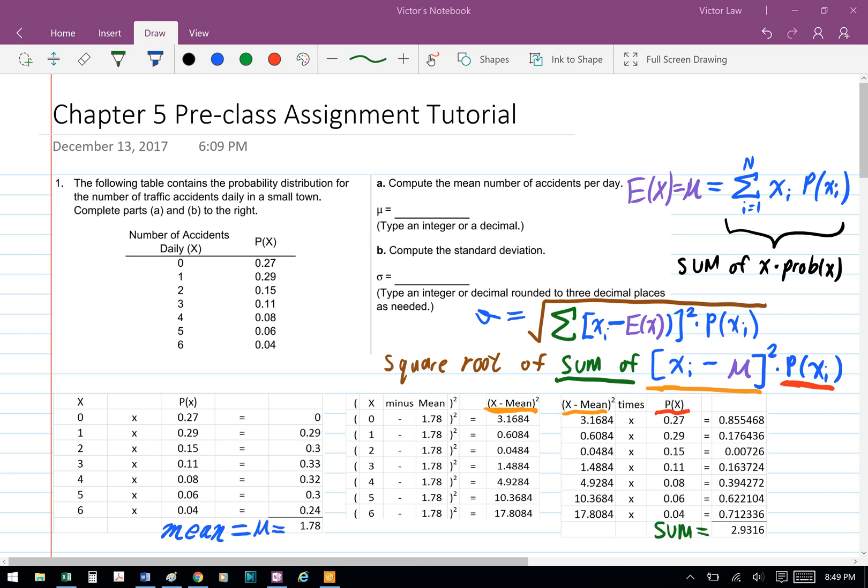And then we're going to add them up. So we get a summation of 2.9316, and then we're going to square root that to get the standard deviation of 1.712, and that's part B of question 1.